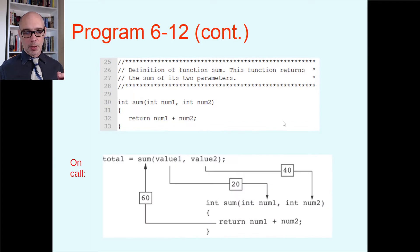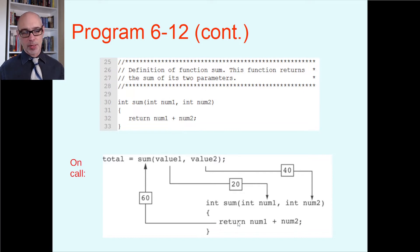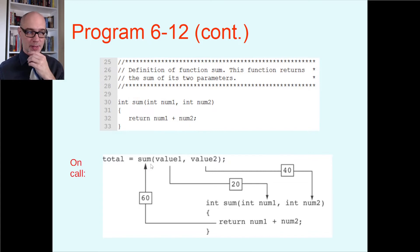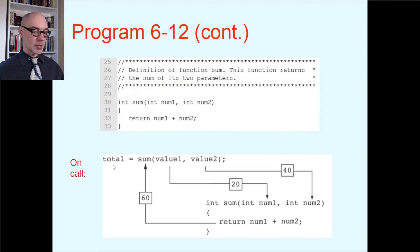When you get to line 17, the sum function gets called and you jump into it. Pass by value: the 20 from value1 gets copied into num1, the 40 from value2 gets copied into num2. The result comes out to 60, which jumps back to where you called it. At that point, the reference to sum is holding the number 60, and then that gets assigned into total to store it. That's what happens with value-returning functions.